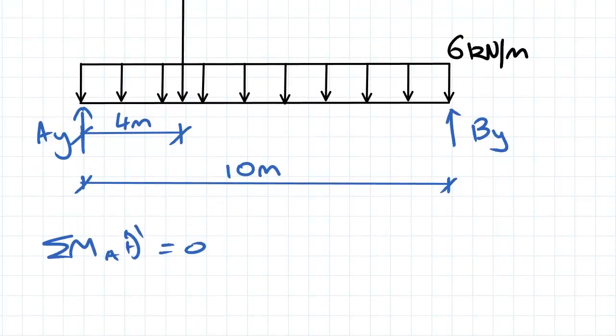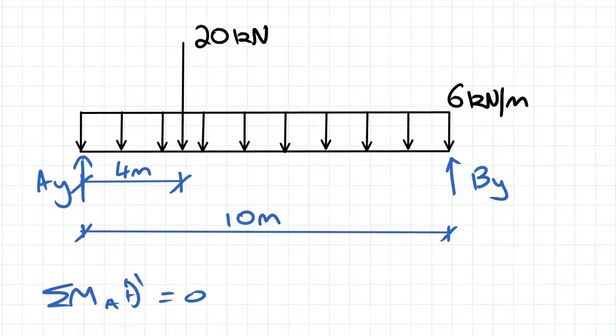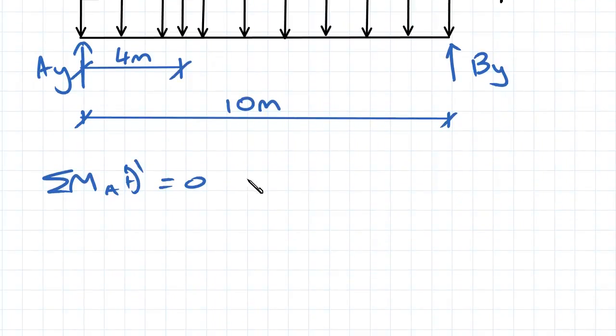So first, I'll take the point load of 20 kN. It's got a moment arm of 4 meters. That's going to turn this beam in the clockwise direction, so it'll be negative 20 times 4 moments. Then we've got BY, which will turn it anti-clockwise. So that has a moment arm of 10 meters and therefore will induce a moment of 10BY.